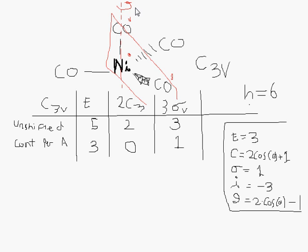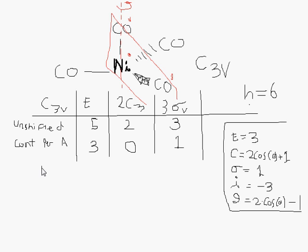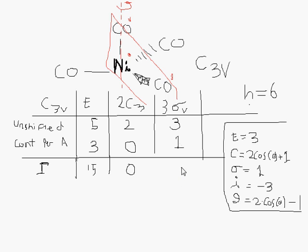What you want to do now is multiply the number of unmoved atoms by the contribution per atom, then multiply by the operation coefficient. I find it easier to multiply everything ahead of time. So: 5 times 3 times 1 is 15. Anything times zero is zero. And 3 times 3 times 1 is 9. You then check that the sum is a multiple of H or equal to H — 15 plus 9 is 24, and 24 divided by 6 is 4, so we're good.